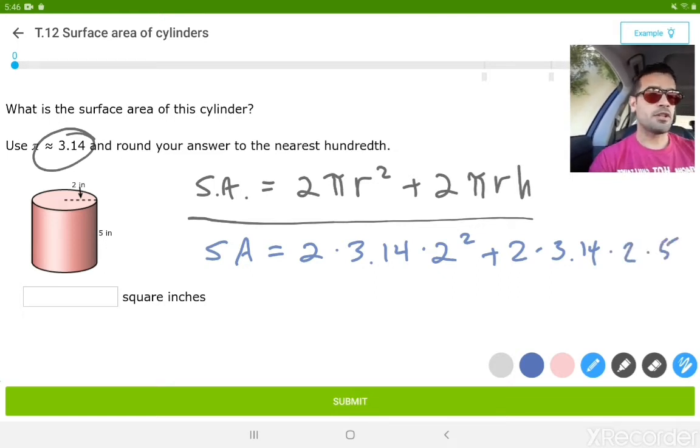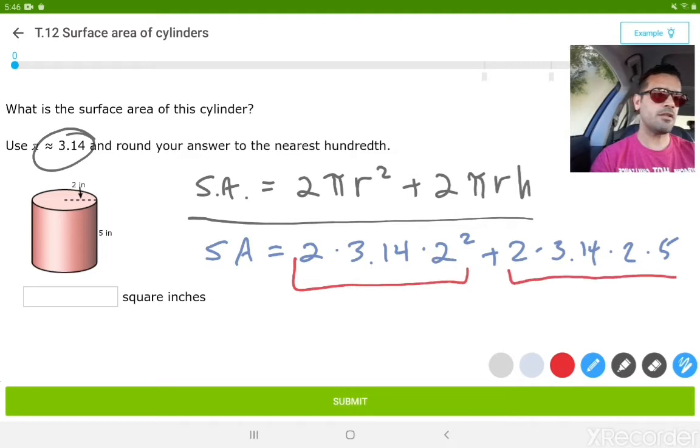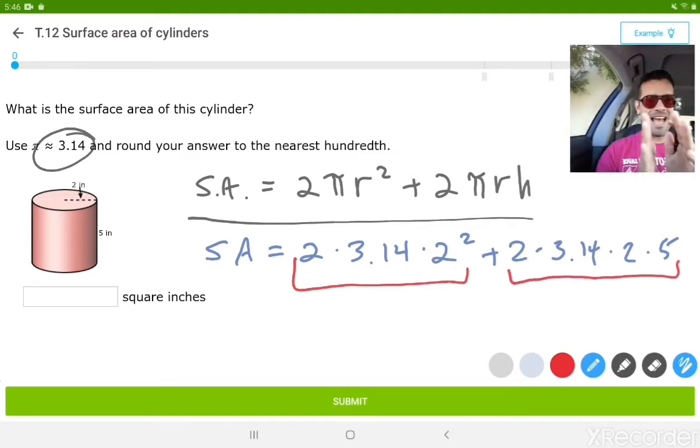Be careful here because we really have two things, two segments of this formula going on. We have to solve those independent of one another before we can add them together because of the order of operations.